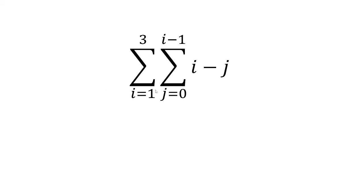In this video, we want to solve a double summation of i equals 1 to 3, j equals 0 to i minus 1 of i minus j.